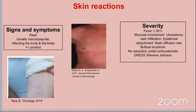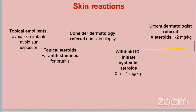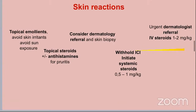Skin reactions: the main sign and symptom is rash, which is mostly maculopapular, affecting the trunk and limbs, with or without pruritus. We consider the case severe if there is fever above 39°C, mucosal involvement, ulceration, rash infiltration, bullous eruption, no resolution under corticosteroid, or presentation as DRESS or Stevens-Johnson syndrome. Management: grade 1 — topical treatment, avoid skin irritants and sun exposure. Grade 2 — topical steroids with or without antihistamines, consider dermatology referral with skin biopsy. Grade 3 — withhold treatment and initiate oral steroids at 0.5 to 1 mg/kg. Grade 4 — urgent dermatology referral with IV steroids at 1 to 2 mg/kg.